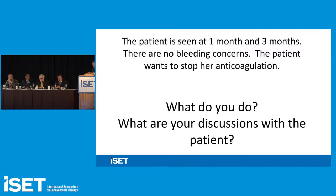How long would you keep her on the low dose? Basically as long as she would take it. By low-dose: rivaroxaban 10 mg or apixaban 2.5 mg twice a day. I think that was a great answer — going over the risk profile, the bleeding profile, and the fact that most bleeds occur early. Patients latch onto two to six months and come in at three months saying they're ready to stop. Having that discussion about the importance of secondary prevention is really important.